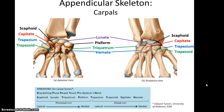The carpals are the wrist bones — there are eight of these. You may find it useful to remember their order from lateral to medial, starting at the proximal to distal rows, by thinking of the mnemonic: 'Stop Letting Those People Touch The Cadaver's Hand,' where the first letter of each word corresponds to the first letter of each bone. The carpal bones are the scaphoid, lunate, triquetrum, and pisiform on top of that, then going back to the lateral side: trapezium, trapezoid, capitate, and hamate.